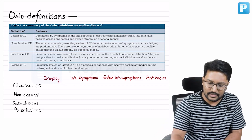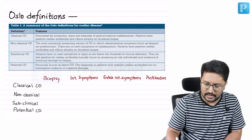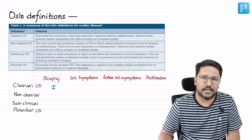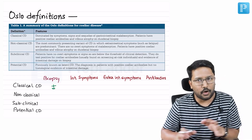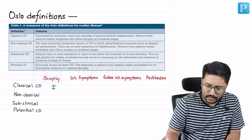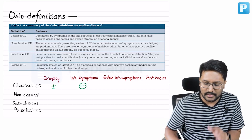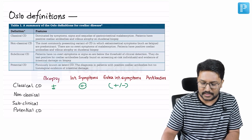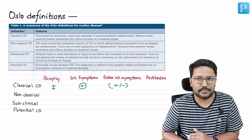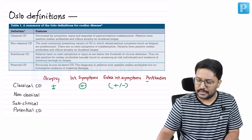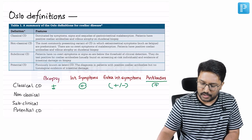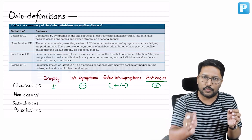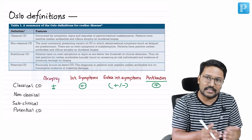Classical celiac disease will be biopsy positive — villus atrophy, crypt hyperplasia, and lymphocytic infiltration will all be seen. Classical means intestinal symptoms are present, extra-intestinal symptoms may or may not be present, and antibodies are positive. So classical celiac disease is where all three things are present: antibodies, biopsy findings, and intestinal symptoms.